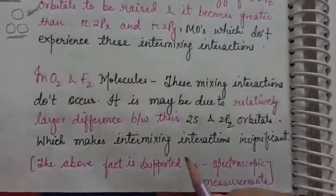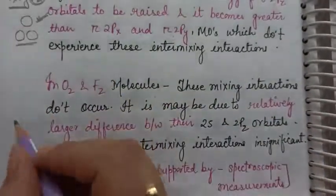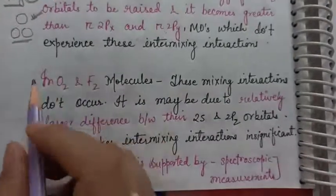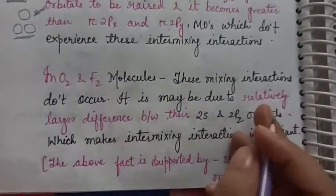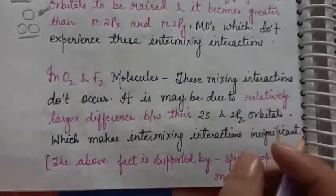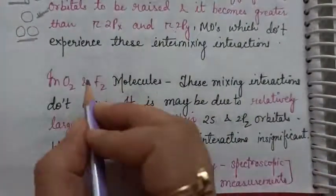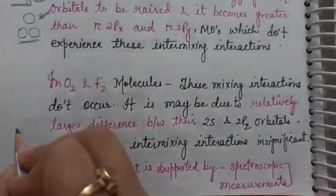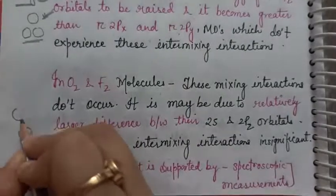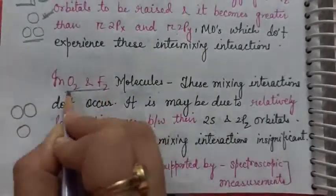And in this case, the sigma 2pz will be normal as you draw it, and the pi 2px and pi 2py are at higher energy. In this case, it is just opposite. The sigma 2pz is lower and the px and py are higher in the case of oxygen, fluorine and neon.